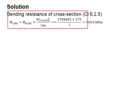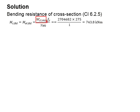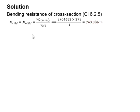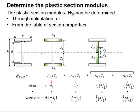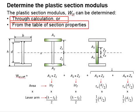The bending resistance of the cross section equals the section modulus times Fy, divided by the partial factor of safety, which equals 743.8 kNm. The plastic section modulus of a typical section can be obtained through calculations or from a table of properties. The easiest way is to obtain the value from the table of properties.